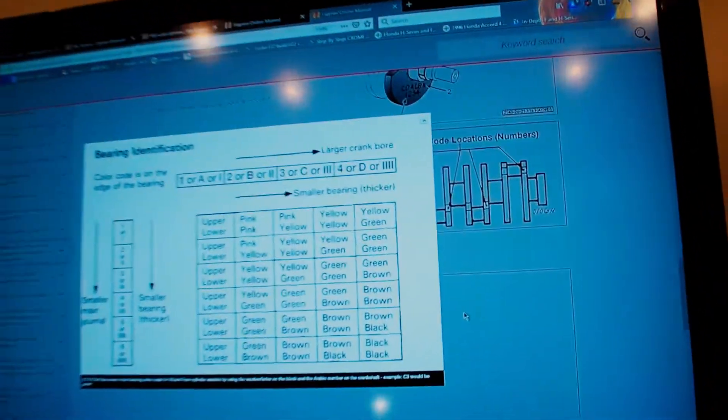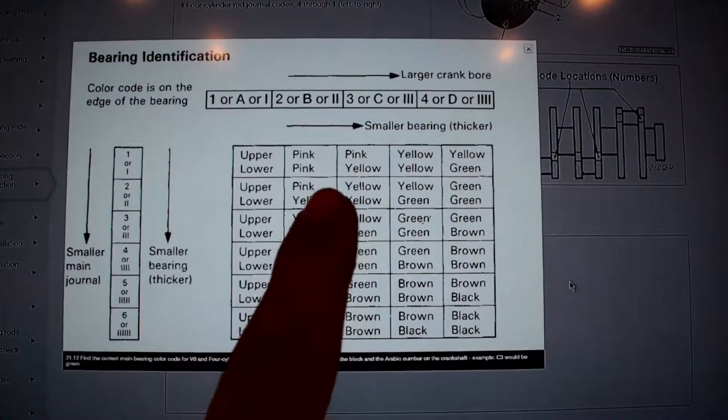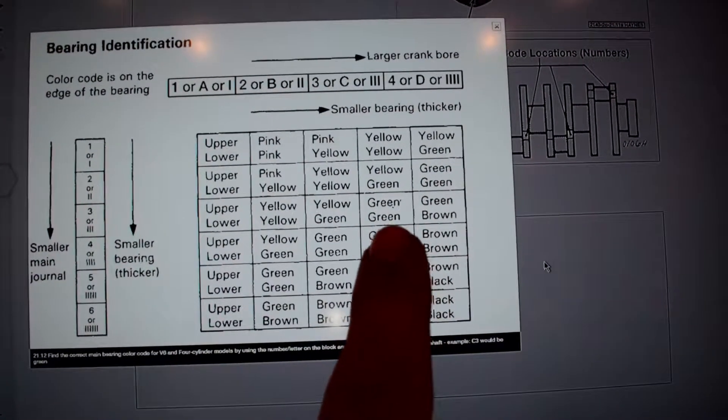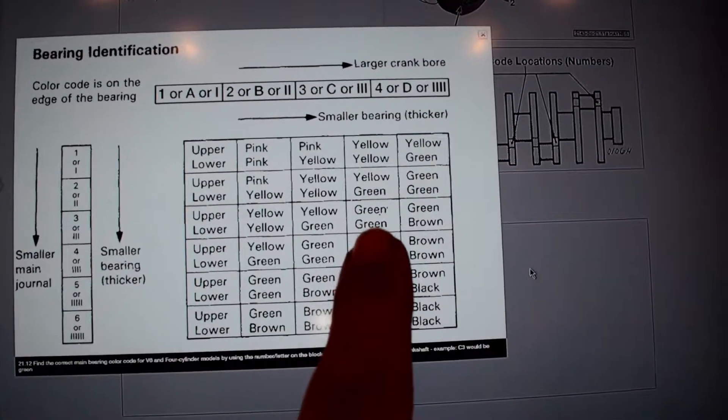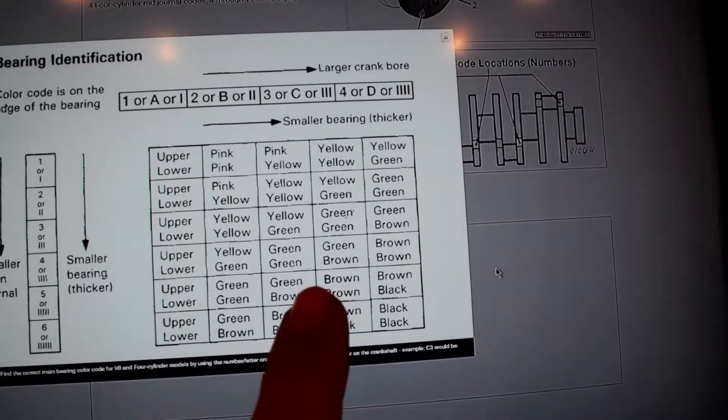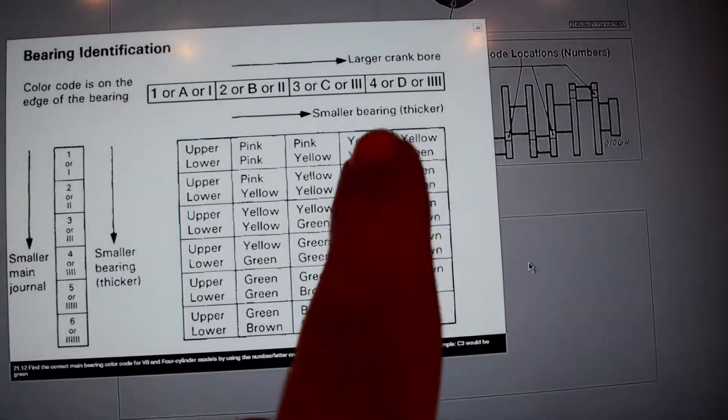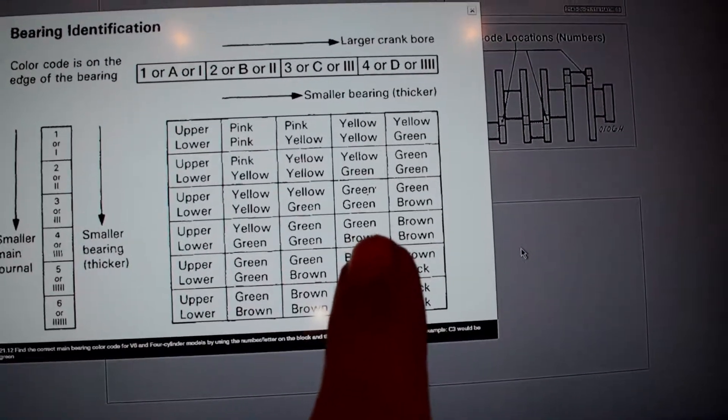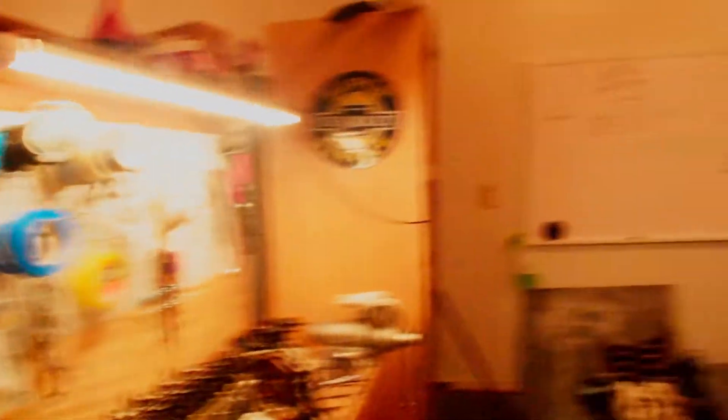And those codes on this chart over here - glad I'm walking back and forth - but on this chart that I have over here on my Helms manual, basically we have a C3 is going to be A, B, C, and then down to 3, green, green. That corresponds to upper and lower bearing. So the upper bearing is green, and the lower bearing is also green. But then if we move over to a C4, we're looking at once again A, B, C, and then we're going to come down 4: 1, 2, 3, 4, which is a green-brown. So the upper bearing is going to be green, and the lower bearing is actually going to be brown.